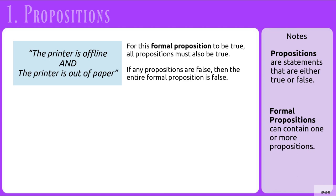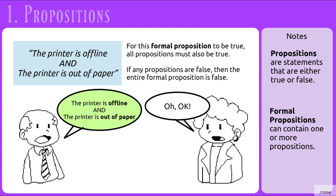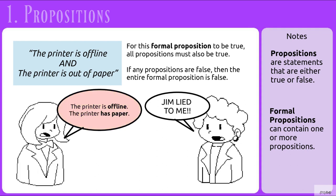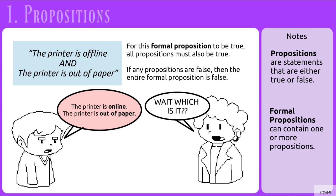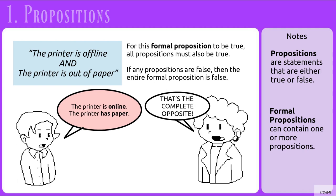Let's look at this illustrated in an example. Say a co-worker tells us that the printer is offline and the printer is out of paper. If somebody else later tells us that the printer is offline but it has paper, then the original statement is false. We encounter the same problem if someone tells us the printer is online but out of paper, because we've been told it is offline AND out of paper. And if someone says the printer is online and has paper, that should also be false.